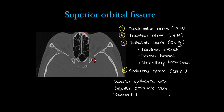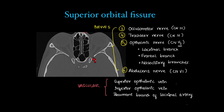There is also the recurrent branch of the lacrimal artery passing through it. So the neural structures are cranial nerves 3, 4, 5, and 6, and those are the vascular structures. The other parts of the trigeminal nerve — the second and third segments — will be discussed in the next few foramina.